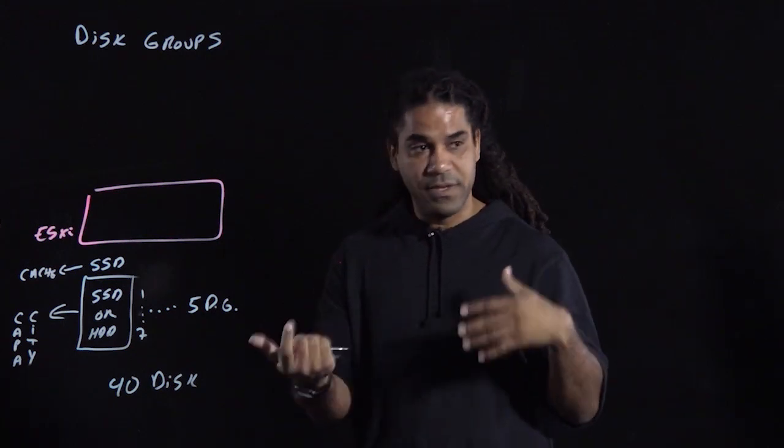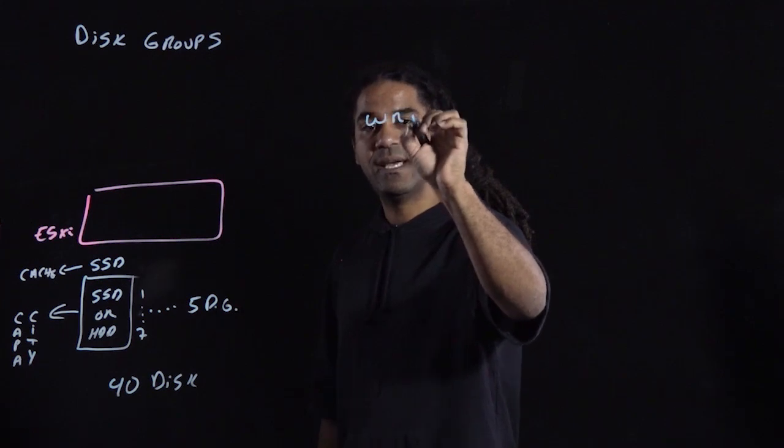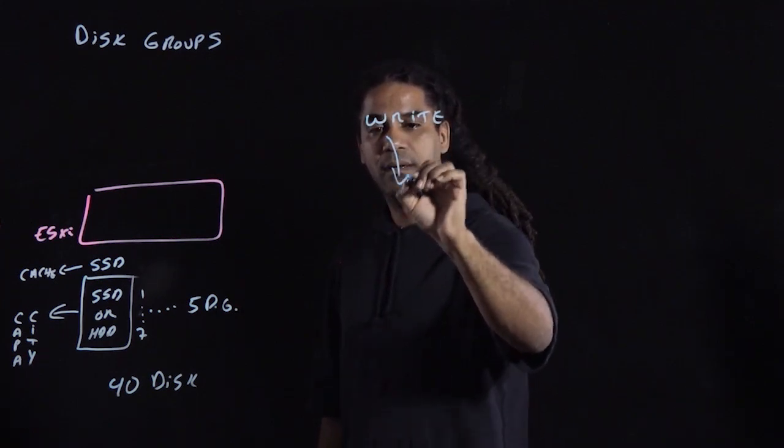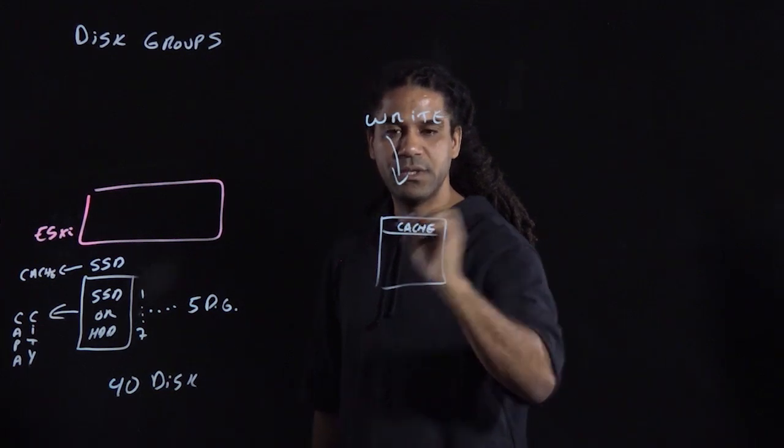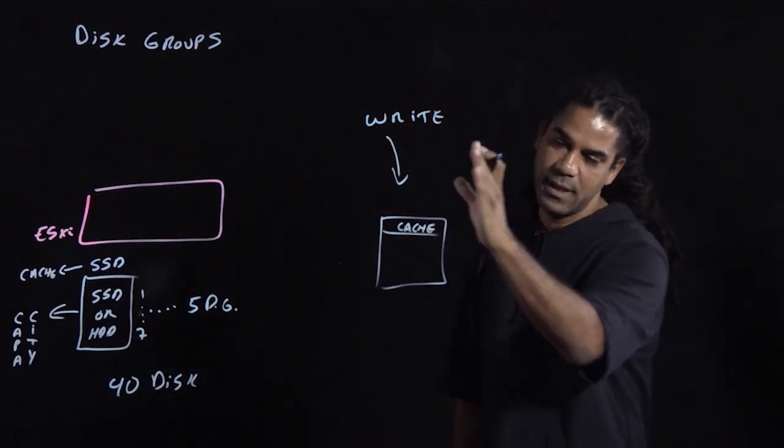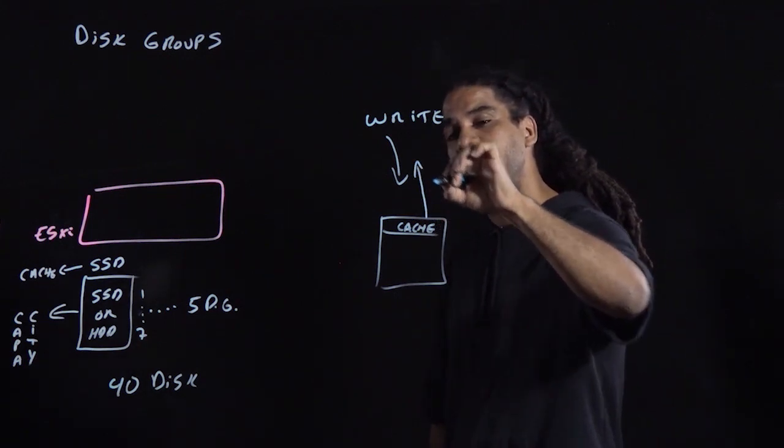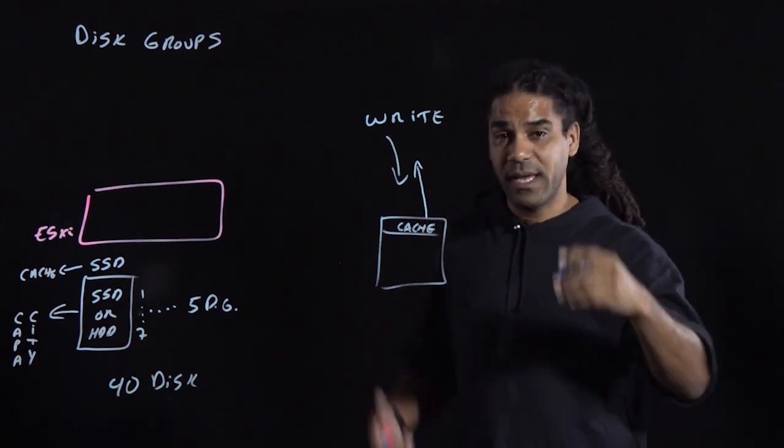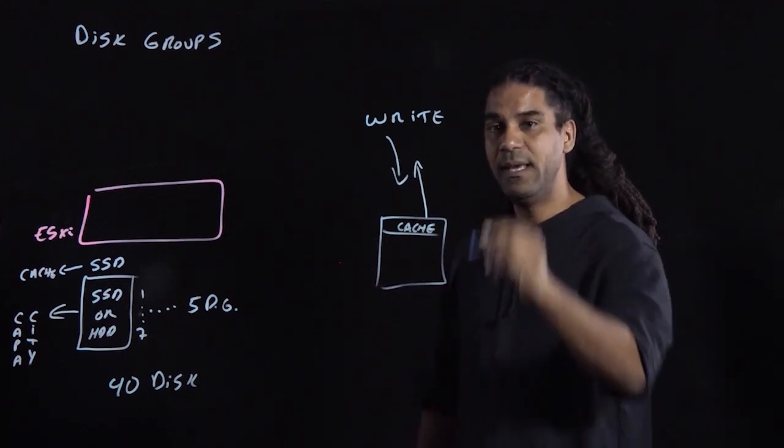When a write comes in to a disk group, it always goes into the cache. Always. 100% of the time, the write is going to come into the cache. The cache is going to turn around and acknowledge that write. So you get a write performance of the cache speed 100% of the time.